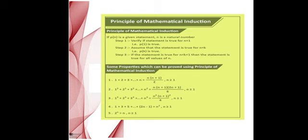This is for the initial conditions — whatever the initial conditions given to the concerned statement, we will be proving for that. The next step is called the inductive hypothesis, where in this step we will be assuming the values of the statement to be true for n equal to k, that is P(k) is true.